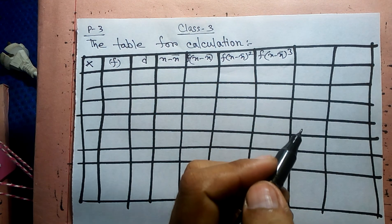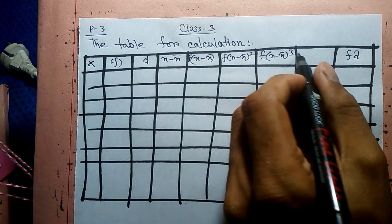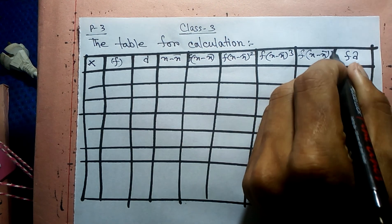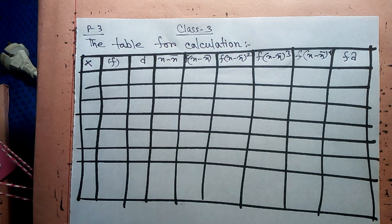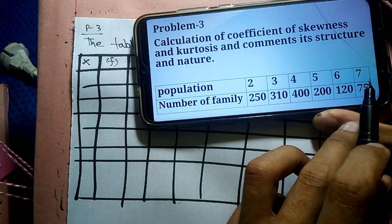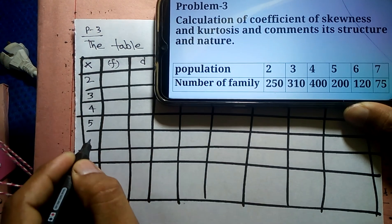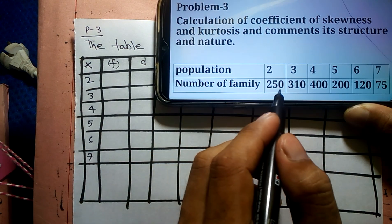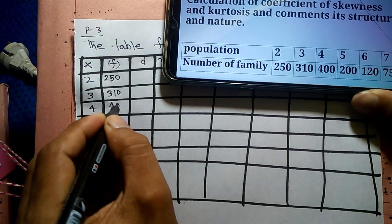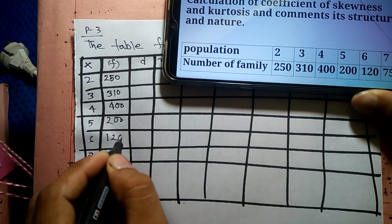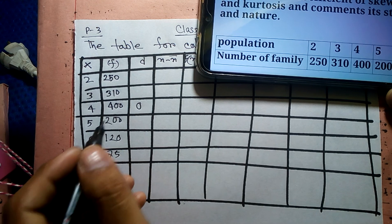Now we select that. This is the magazine. We have f into x minus x̄ whole power fd. As we can see, for x̄ below, we go daily — two, three, four, five, six, seven. X̄ is calculated from the class. Two, three, four, five, six, seven — frequency, number of families. I shot into the stars.